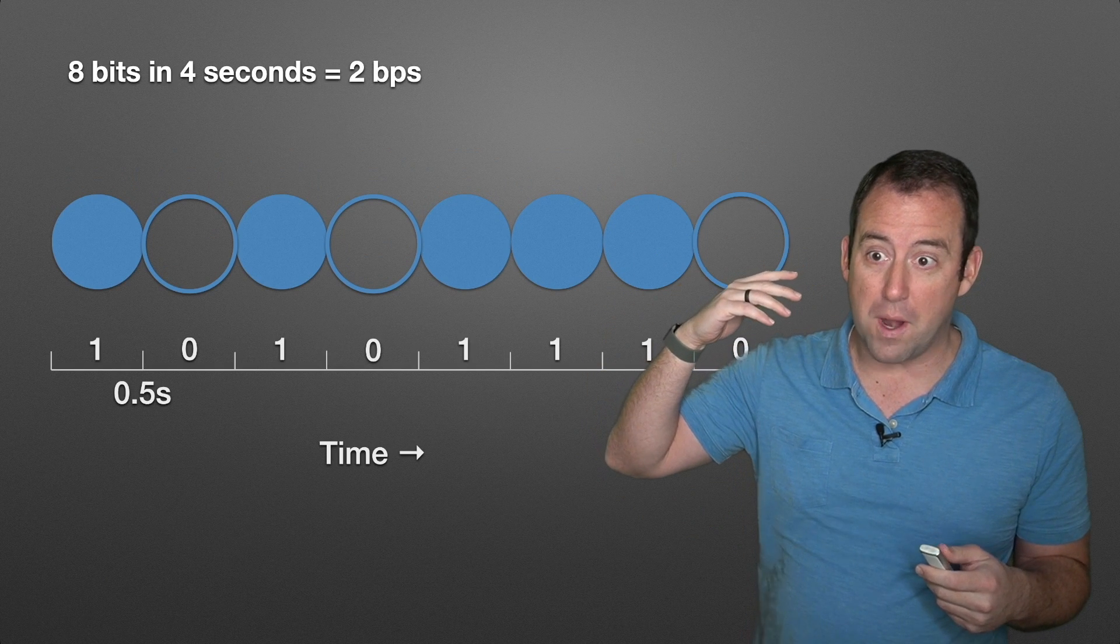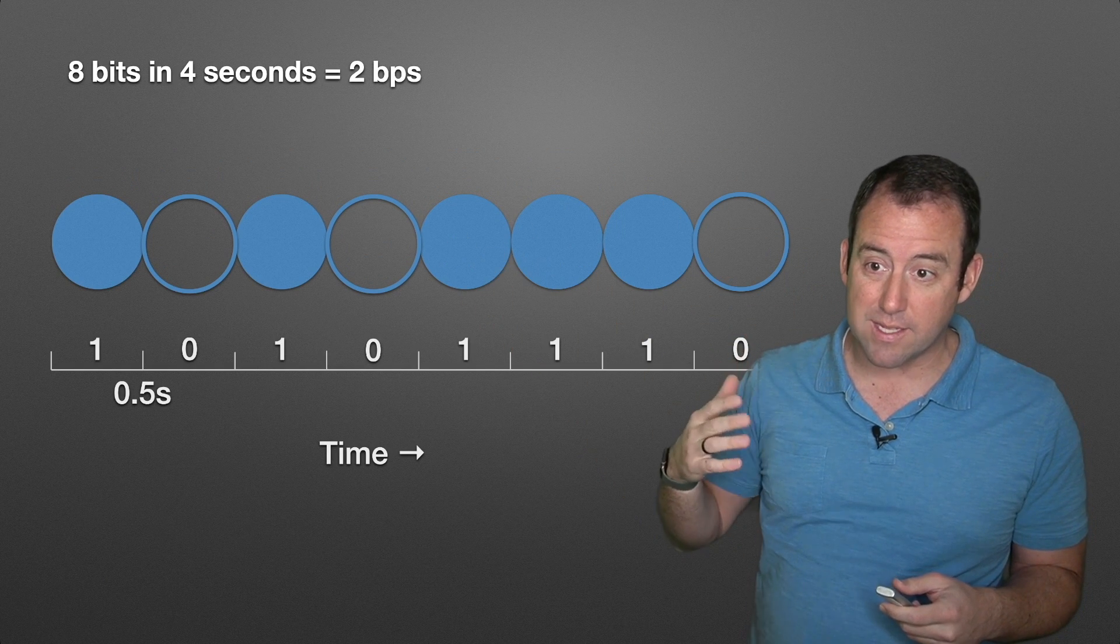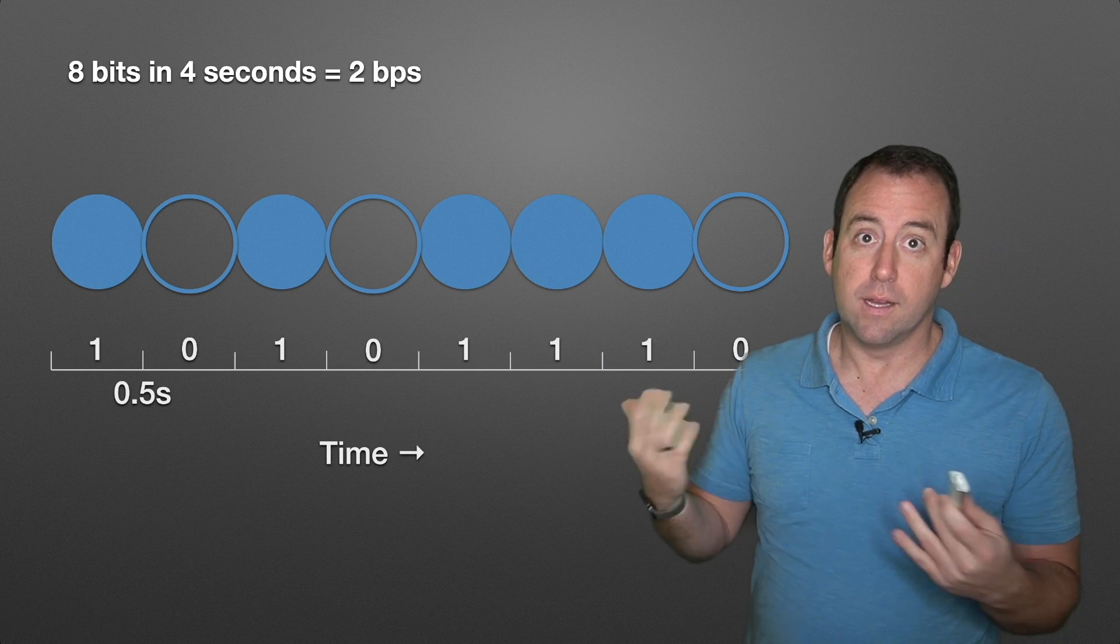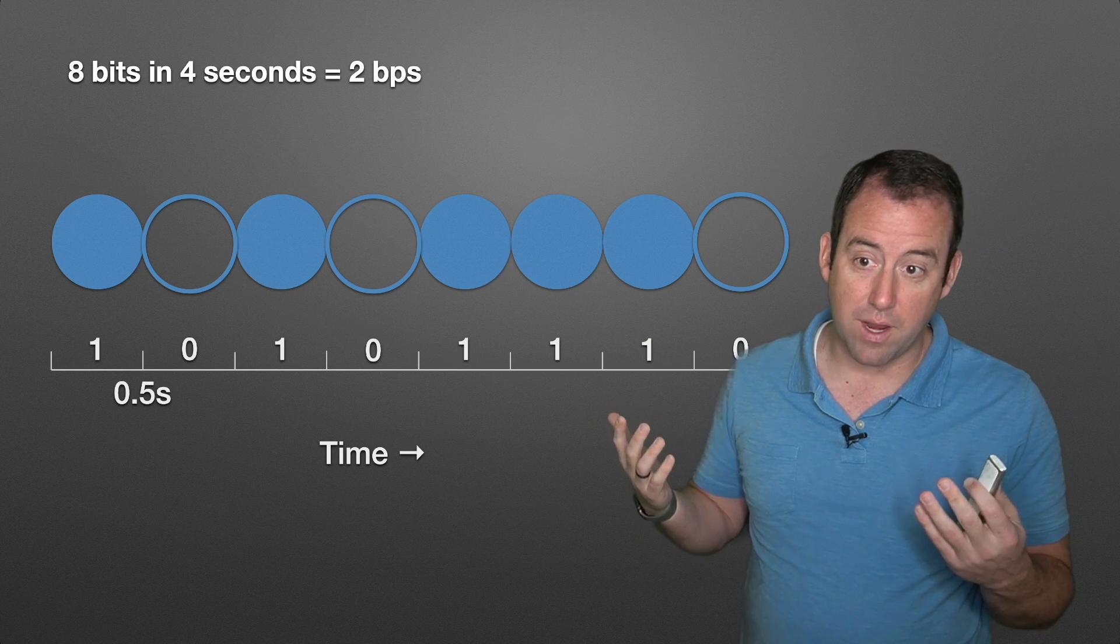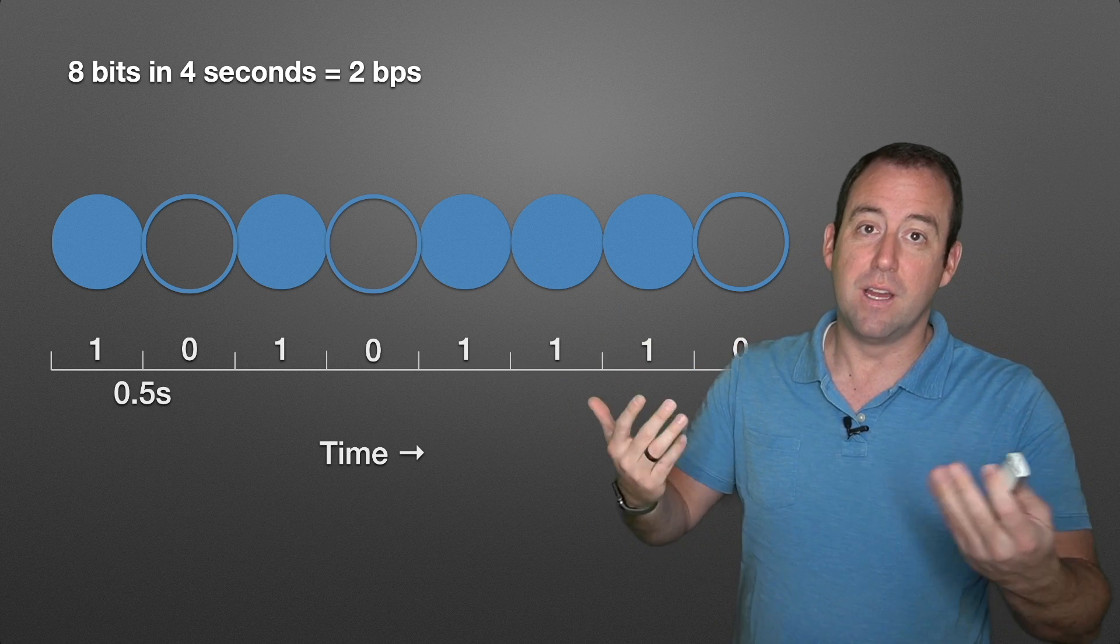How much faster was it? Well, before we were at one bit per second. Now we have eight bits being sent over four seconds or a total of two bits per second. That's great. We've doubled our bandwidth.